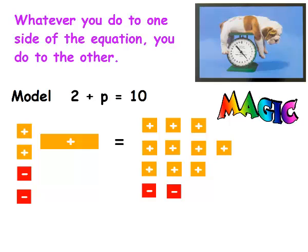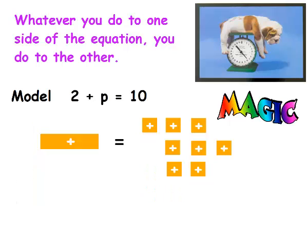So now I see a lot of zero pairs. I'm going to get rid of those — that means they're gone. So I'm left with x equals 8. I plug it into the problem: 2 plus 8 equals 10.